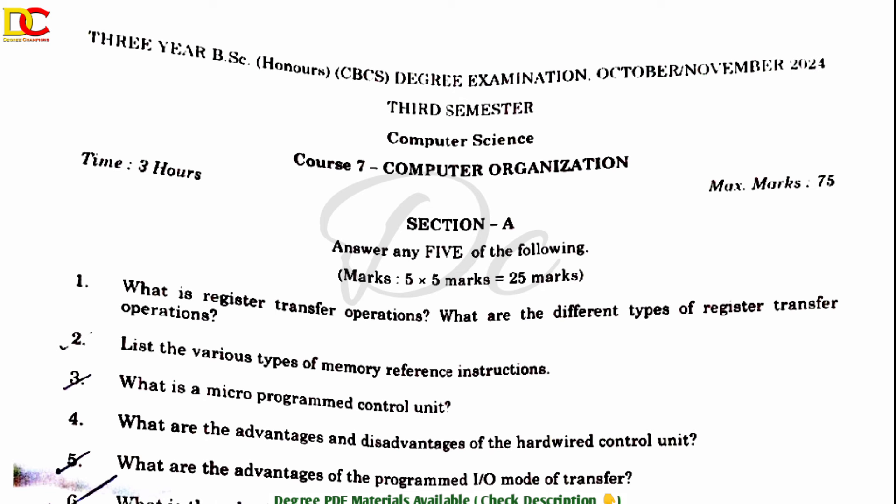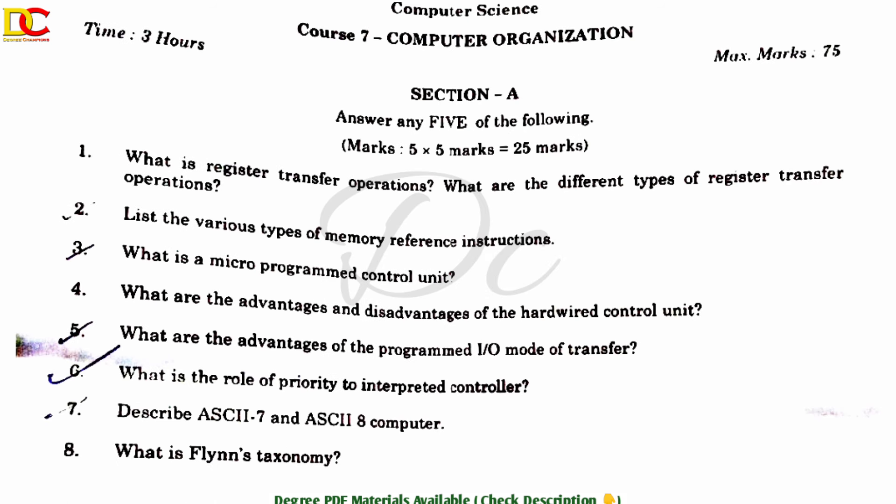5 questions from the following, 5 into 5 equals 25 marks. First question: What is register transfer operations? What are the different types of register transfer operations? Second question: List the various types of memory reference instructions. Third question: What is a microprogrammed control unit? Fourth question: What are the advantages and disadvantages of hardwired control unit? Fifth question: What are the advantages of programmed I/O mode of transfer? Sixth question: What is the role of priority interrupt controller? Seventh question: Describe ASCII-7 and ASCII-8 computer. Last question: What is Flynn's taxonomy?